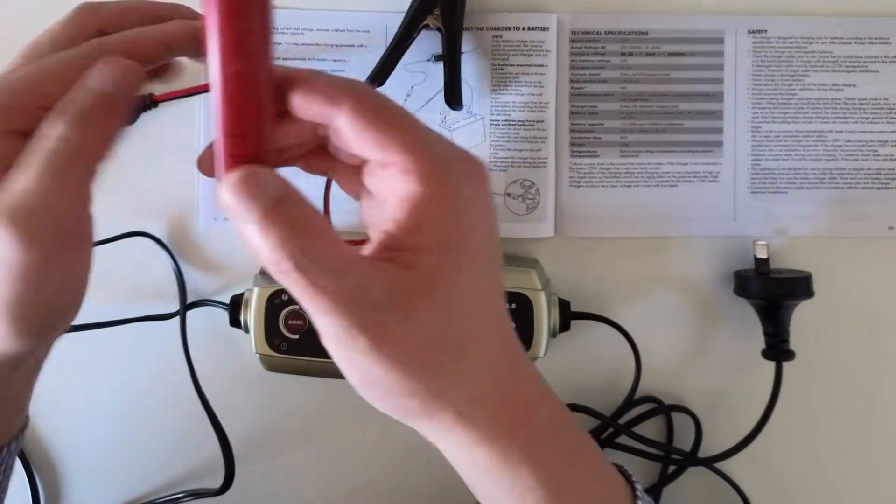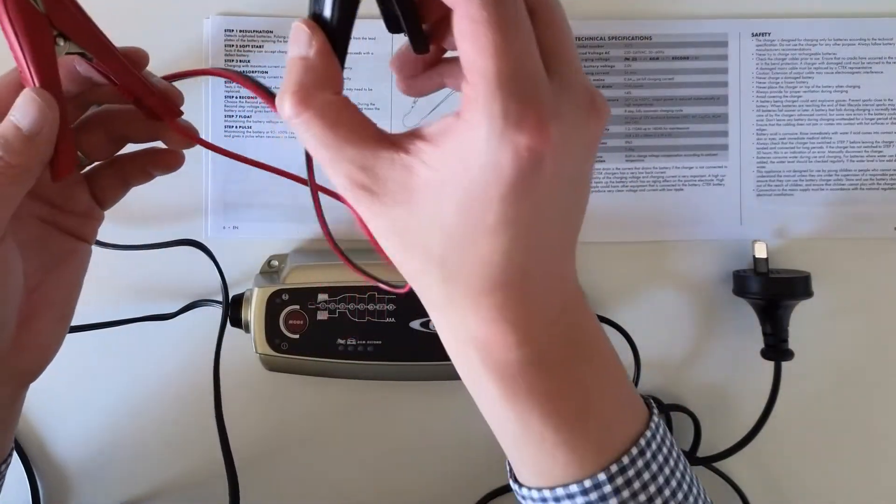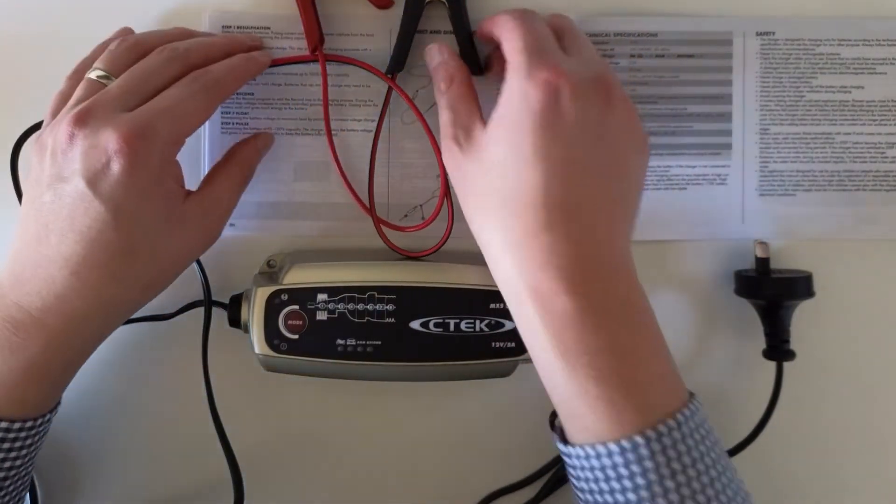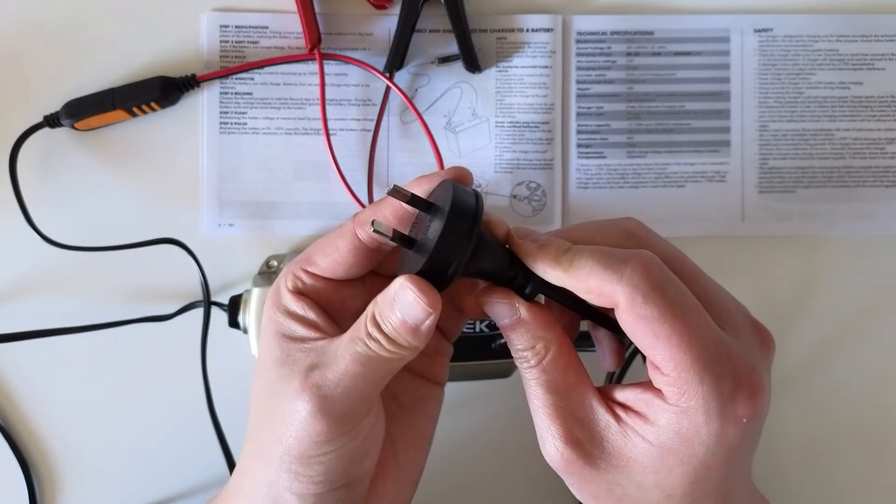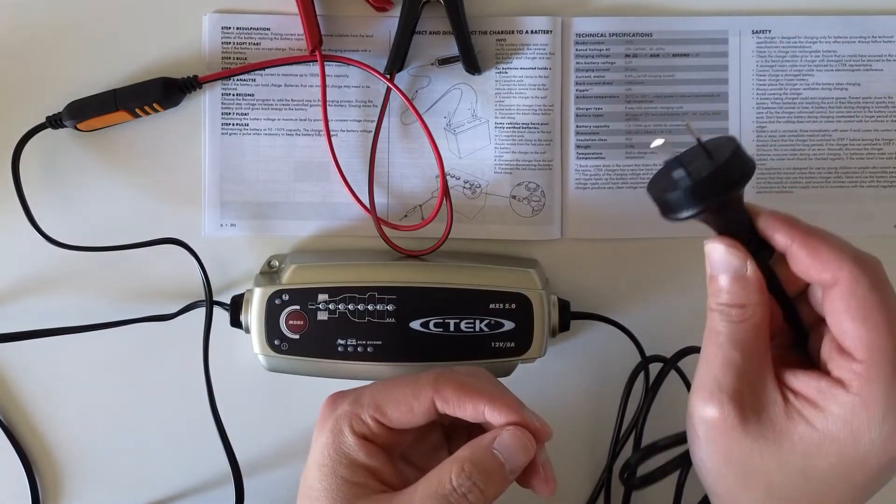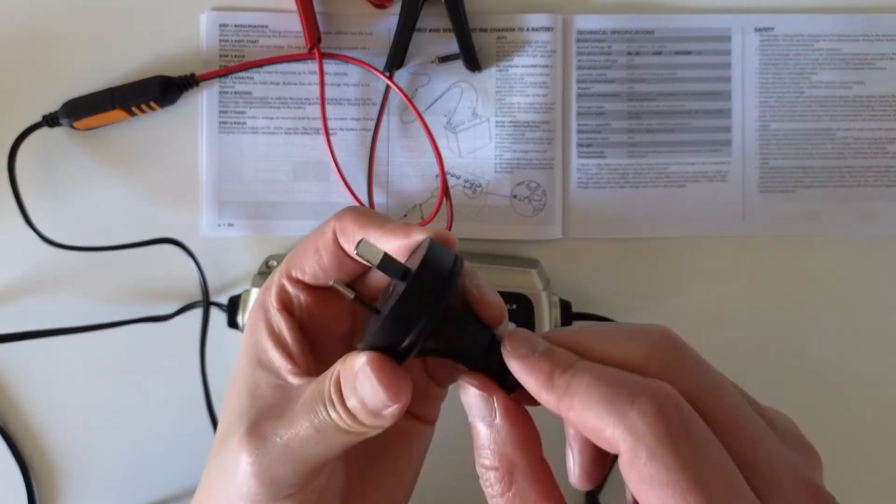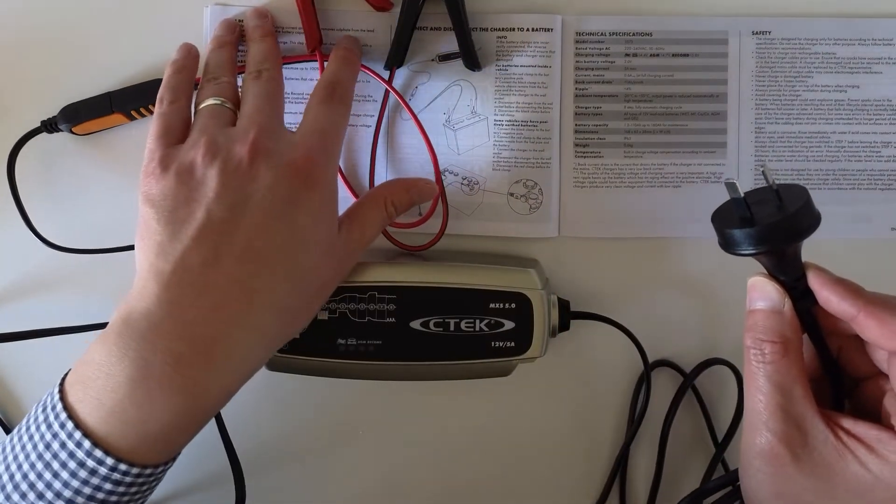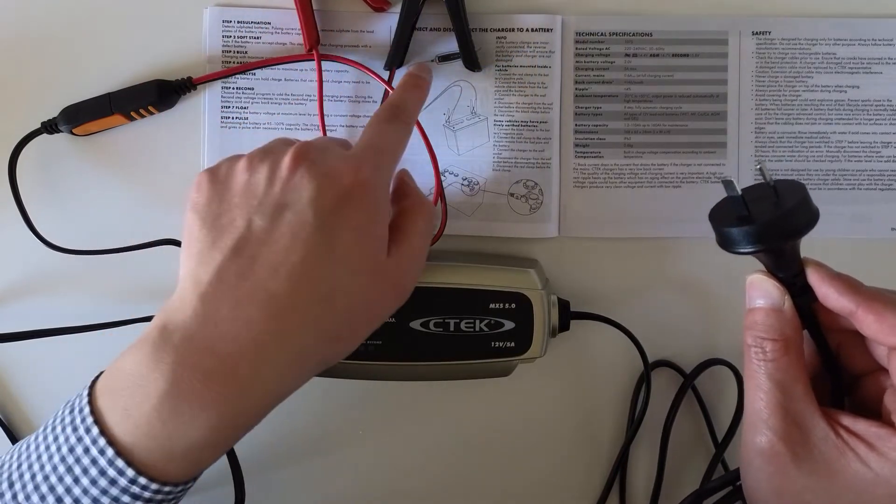Then you connect the positive to the positive, negative to the negative. Only after doing that, then you try to insert the plug into the power socket. You should not insert the plug into the socket first without attaching the test leads to the battery.